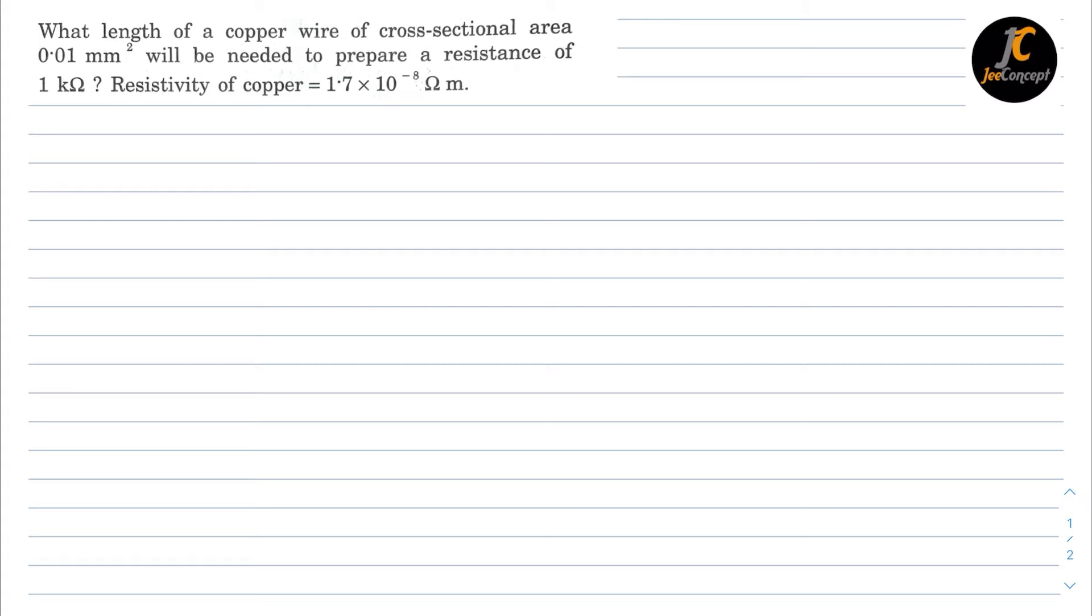So we can simply solve this question using the formula R is equal to rho L by A. Here we have to find the value of L so that will become R into A upon rho.